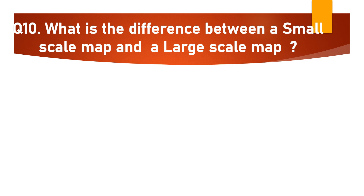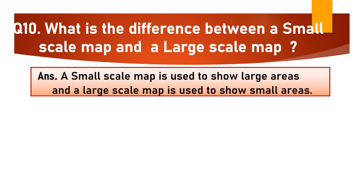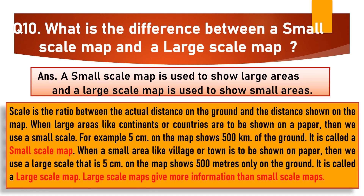The last question for today is Question No. 10: What is the difference between a small scale map and a large scale map? A small scale map is used to show large areas, and a large scale map is used to show small areas. Scale is the ratio between the actual distance on the ground and the distance shown on the map. When large areas like continents or countries are to be shown, we use a small scale — for example, 5 cm on the map shows 500 km on the ground. When a small area like a village or town is to be shown, we use a large scale — that is, 5 cm on the map shows 500 m only on the ground. Large scale maps give more information than small scale maps.